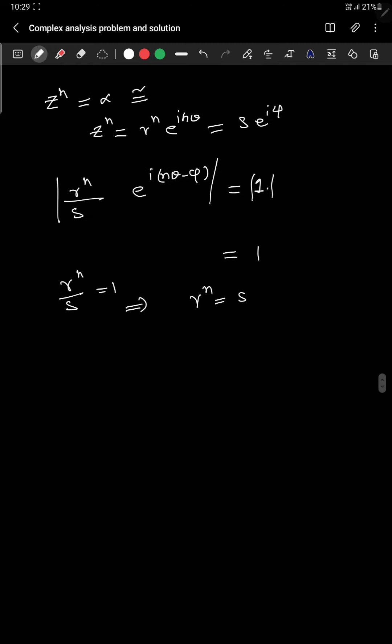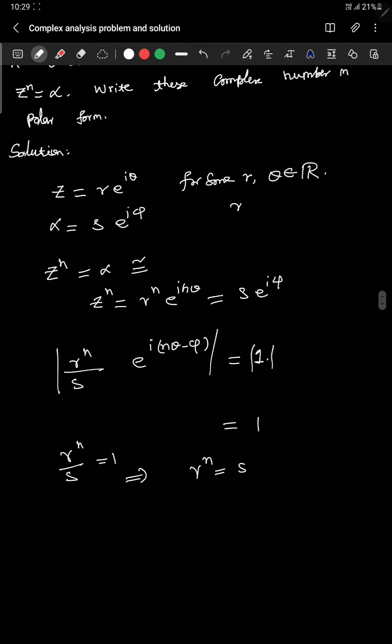So this is r^n/s which is 1. So that implies r^n equals s. And remember that when you write in polar form there is r greater than 0. And all of them are non-zero numbers. And s is also greater than 0.